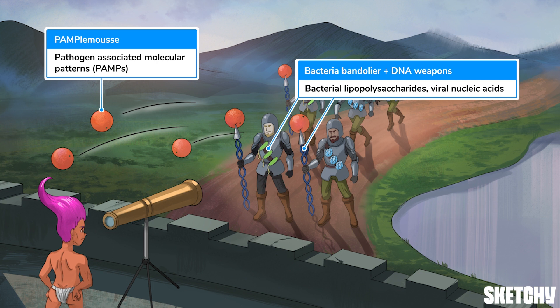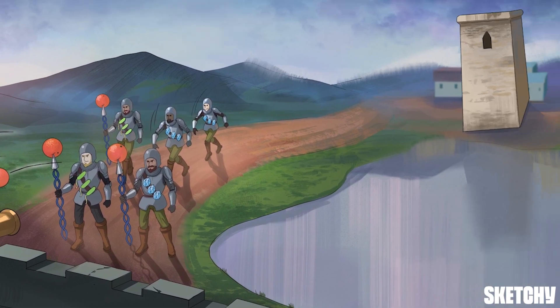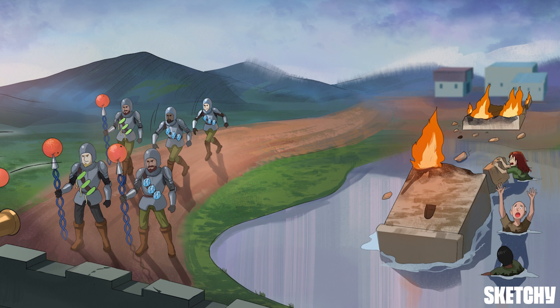We've got this gang of merry invaders slinging juicy pamplemousses towards the castle to symbolize these pathogen-associated molecular patterns. Notice how they're wearing bacteria and virus-shaped armor — that's because PAMPs are found on these types of pathogens.